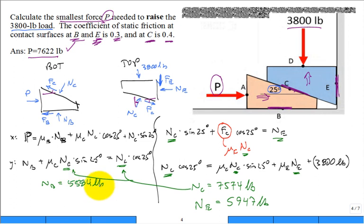And then we can move to the very last equation, and the load P that is applied: 7,622 pounds. That's what's needed.